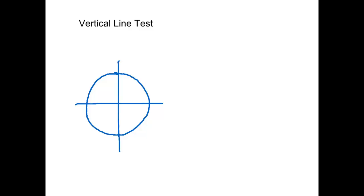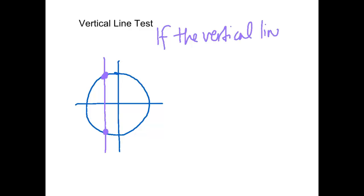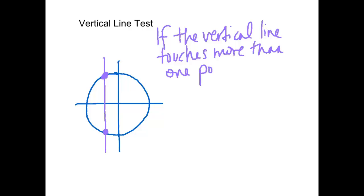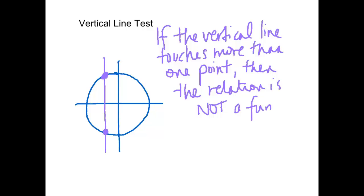Here's an example: a vertical line hits two places on that circle graph. So to summarize: if the vertical line touches more than one point, then the relation is not a function. If I were doing this in person I'd get a ruler out as a vertical line. Starting at the left it touches no points, and as you move it closer there's a point where it's tangent and touches only one point, but as soon as it moves further it starts touching two points at once.